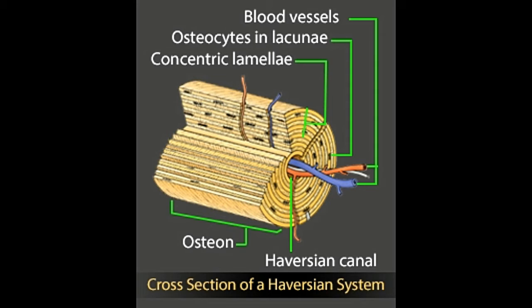Compact bone and spongy/cancellous bone are the two types of bones in the human body. The former makes up about 80% of the bones, while the latter constitutes the remaining 20%. Compact bones form the hard exterior, whereas spongy bones have several pores filled with nerves and blood vessels. The osteons are closely packed, with osteocytes lined up in concentric rings, imparting a hard and dense texture to compact bones.